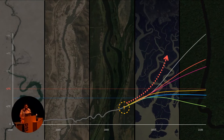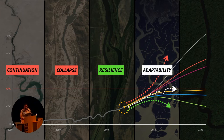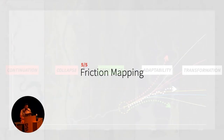If we continue downstream as if nothing happened, or just think there's nothing for us to do, this is where it leads us. We can think about resilience, but we should also think about adaptability and transformation - these are also possibilities for political imagination. Friction mapping is one of the techniques I use both for my design work, in my creative practice, and as a futures and foresight facilitator.